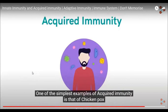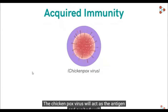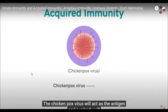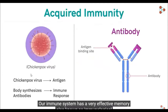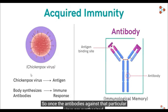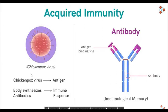This is nothing but acquired immunity. One of the simplest examples of acquired immunity is that of chickenpox infection. The chickenpox virus will act as the antigen and our body will synthesize antibodies against it as an immune response. Our immune system has a very effective memory, also known as immunological memory. So once the antibodies against this particular virus are synthesized, then the next time the immune system will recognize the same antigen and destroy it before it can cause any type of infection. This is how acquired immunity works.